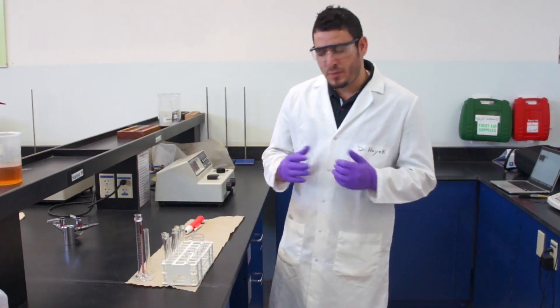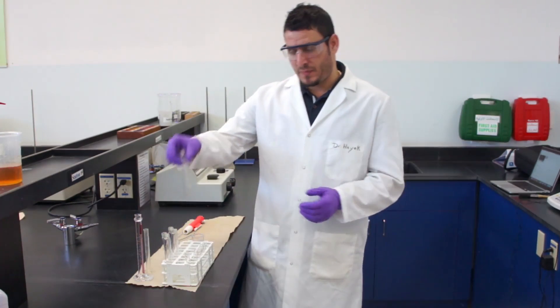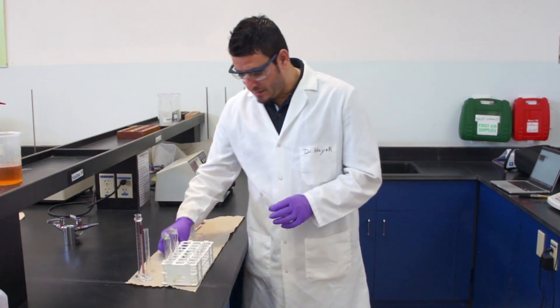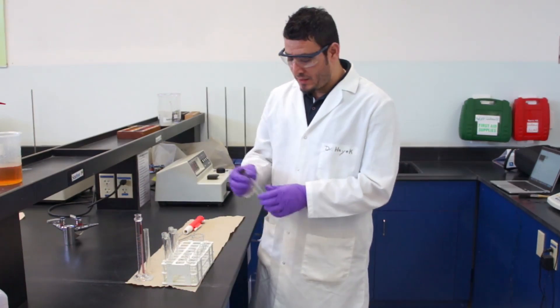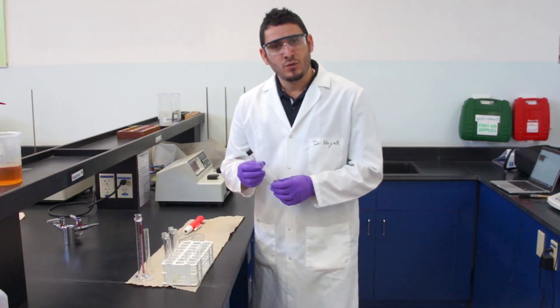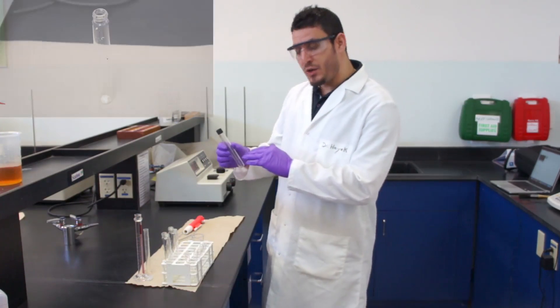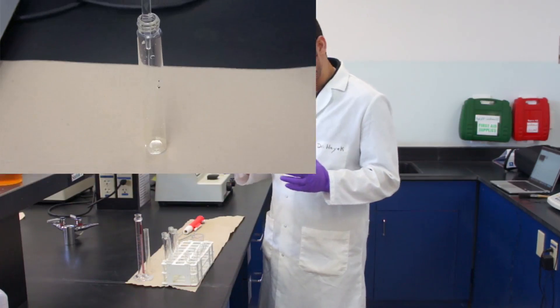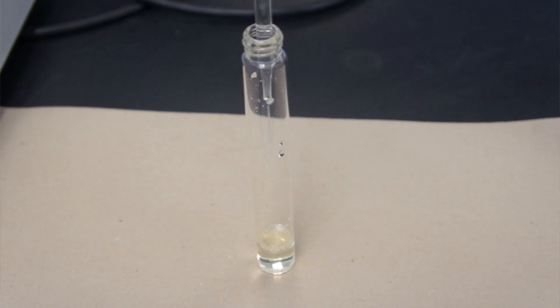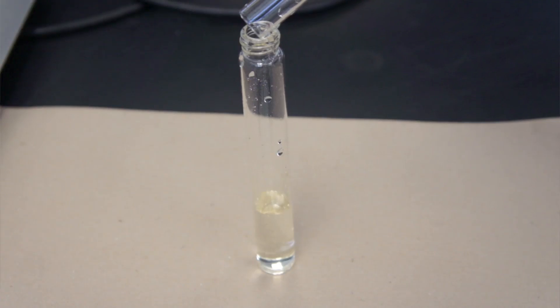First, we are going to prepare our samples. We will be using these tubes, and they come with a cap. In every tube, you are going to add a fixed amount of iron-3. In all of them, we will have 5 milliliters. Once you add the 5 milliliters to your tube, you can add the corresponding amount of water. The amount of water will vary from one sample to another, as it was discussed before.